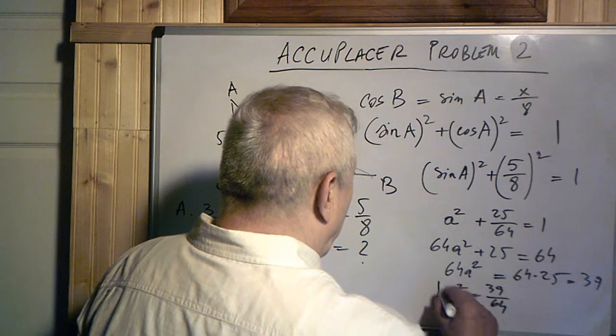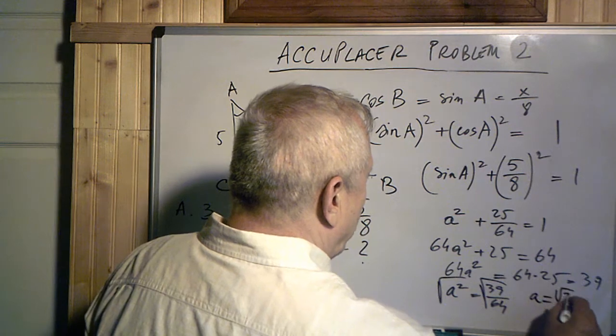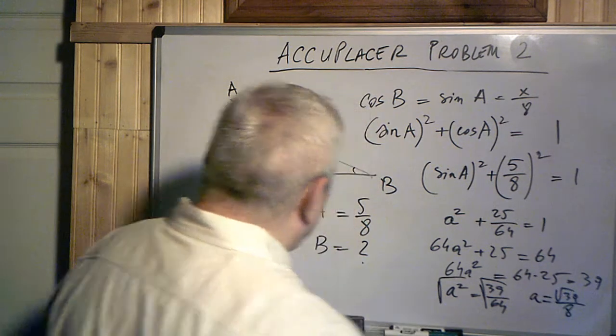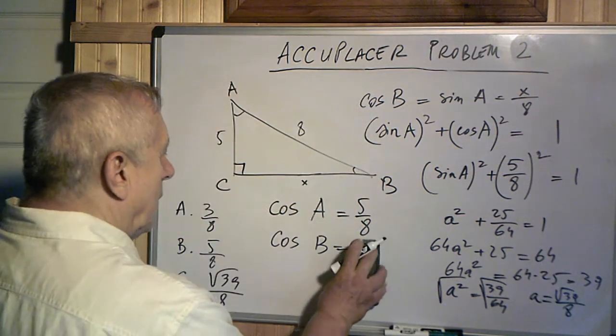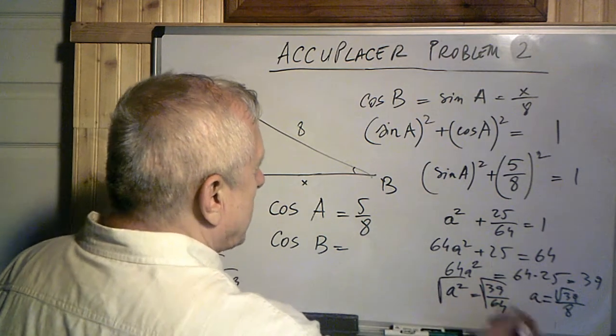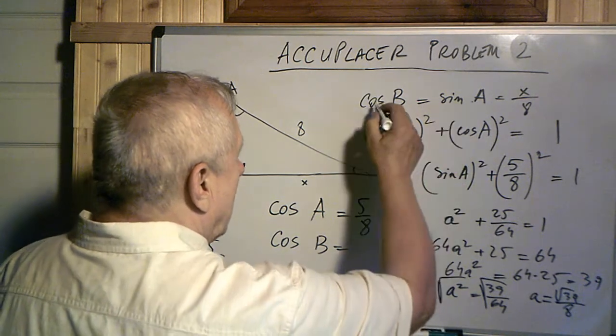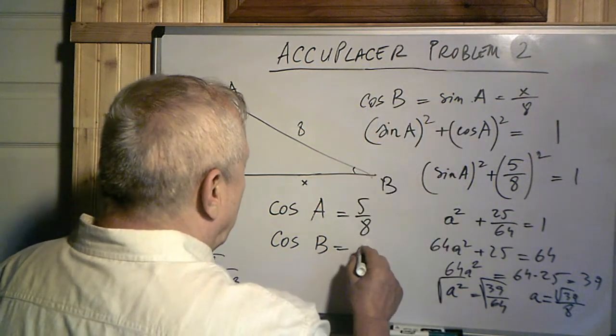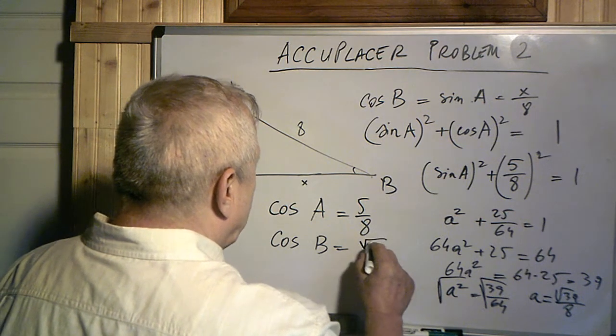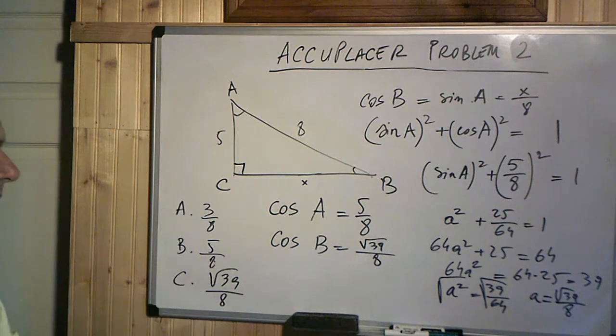And now if we apply a radical on both sides, we get a equals square root of 39 over 8. So the a, as I said, is sine of A, actually, is the same thing as cosine of B. So in this case, the value of cosine of B is square root of 39 over 8. That's the answer here.